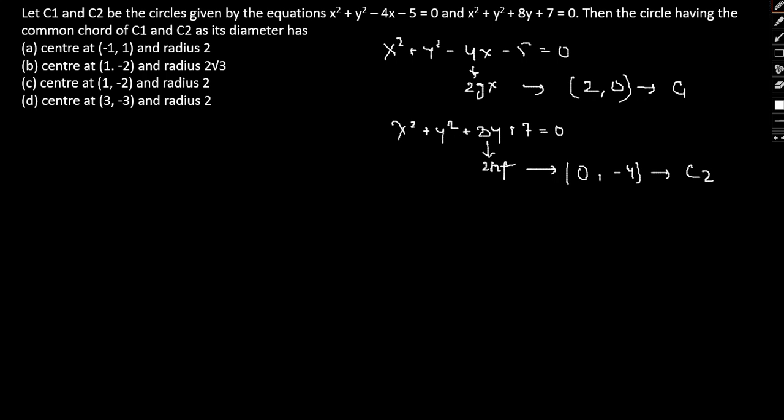It's given that C1 and C2 are two circles, then the circle having common chord - therefore the circle which has a common chord, the center of our required circle would simply be (0 + 2)/2, (0 - 4)/2, that is (1, -2). This is our required center of the circle.